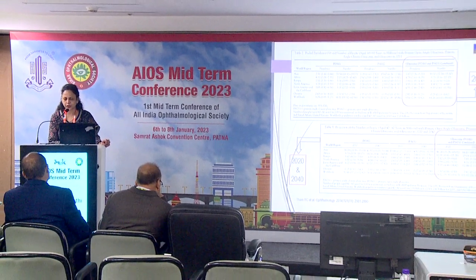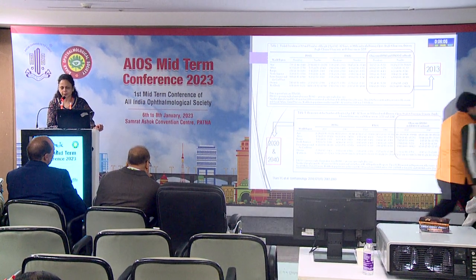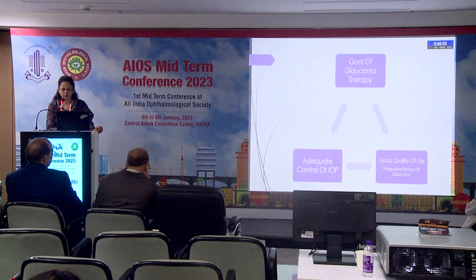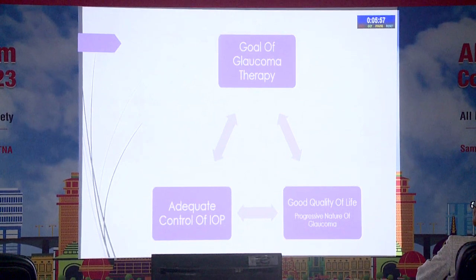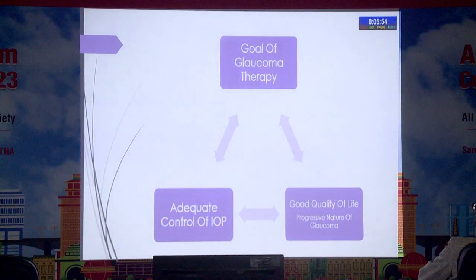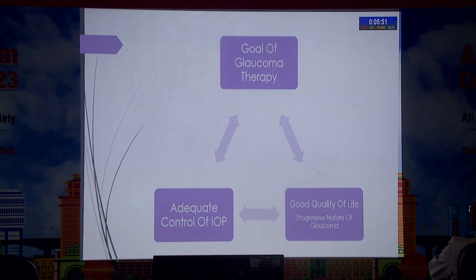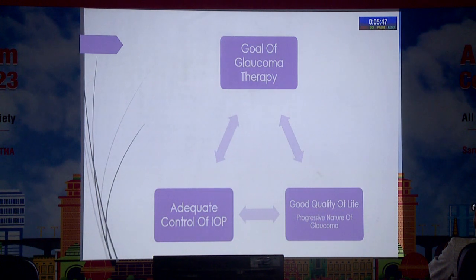Why is it so important to see disease progression in time? According to a systemic review and meta-analysis projected by Tham et al., it is estimated that by 2040, 66.83 million people worldwide will be affected by glaucoma, up from 46.24 million in 2020. That's a huge burden because glaucoma is a permanent blinding condition. The goal of glaucoma therapy is control of IOP alongside maintaining good quality of life, keeping in mind the progressive nature of the disease.